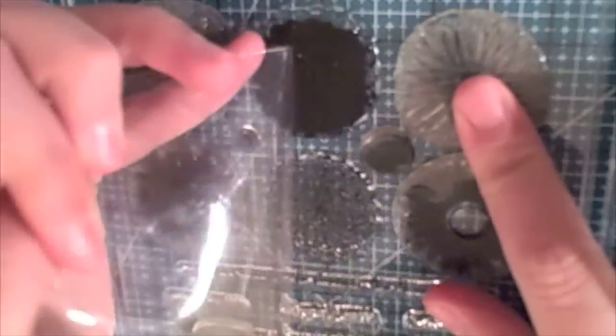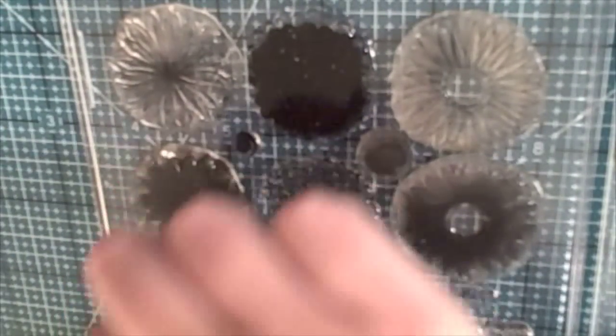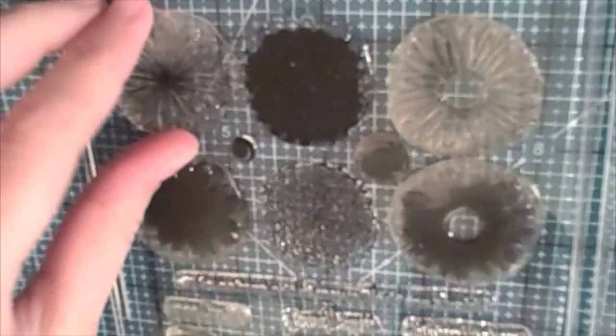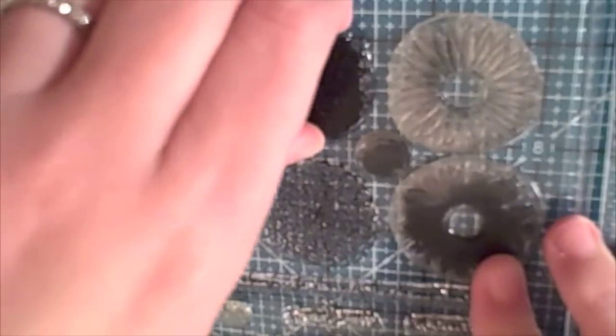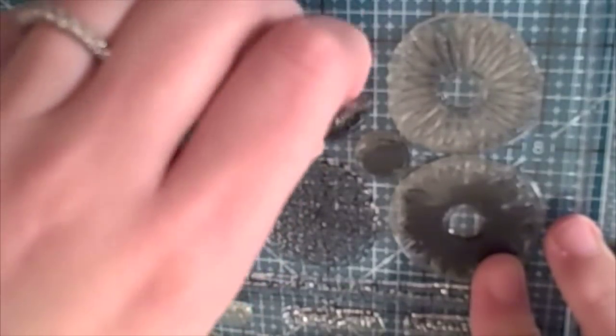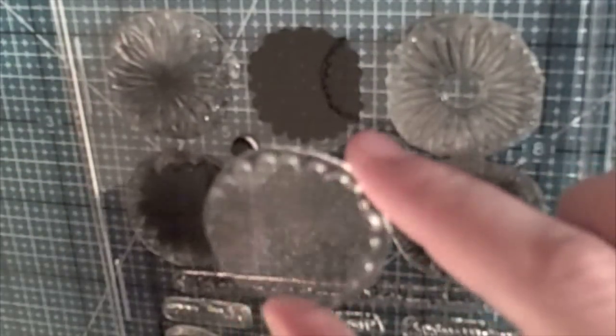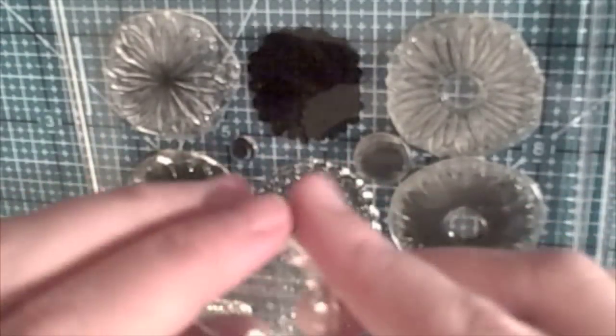I'm just peeling off a backing here, and what's really cool about these stamps is they have a cling, sticky back to them, so you can put them in CD cases and store them that way. They take up very little space, and the other most wonderful thing is that they are clear, so you can see right through it and see where you're stamping.